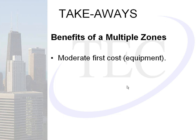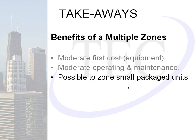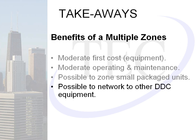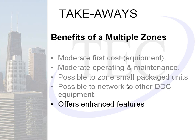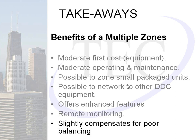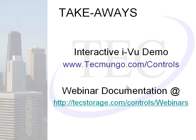Benefits of the constant volume multiple zone system include moderate first cost, moderate operating and maintenance, ability to zone smaller package units, capability to network to other DDC equipment, enhanced features, and remote monitoring. It also slightly compensates for poor balancing by adjusting to zone demand. You can view an interactive iVu demo at www.tecmongo.com/controls. All webinar documentation will be posted at tecstorage.com/controls/webinars.